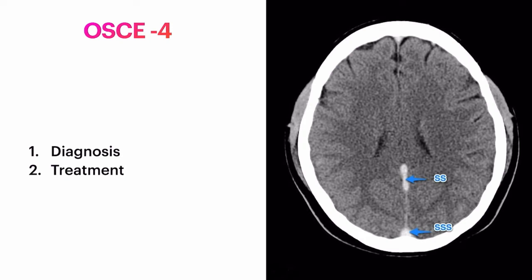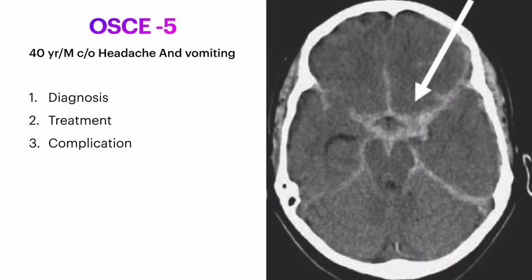Question four: a sickle cell patient came with complaint of headache — very severe headache which is not responding to NSAIDs. A CT scan was done which is suggestive of the image shown. Write down the diagnosis, treatment options in this case, and the complications in this patient.